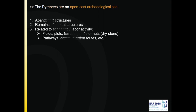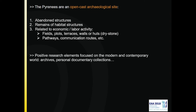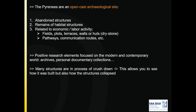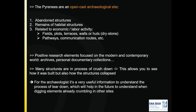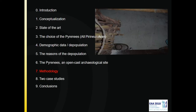There are abundant structures — remains of habitat structures related to economic and labor activity: fields, plots, walls, stones, pathways, communication routes, etc. We can focus on the modern and contemporary period and work with archives, personal documents, house papers, photographs. Many structures are in the process of collapse or already down, and this allows you to see how they were built but also how the structures collapsed. This is very interesting for our students, because they can learn about the best process of archaeological research and, obviously, the effects on the landscape.